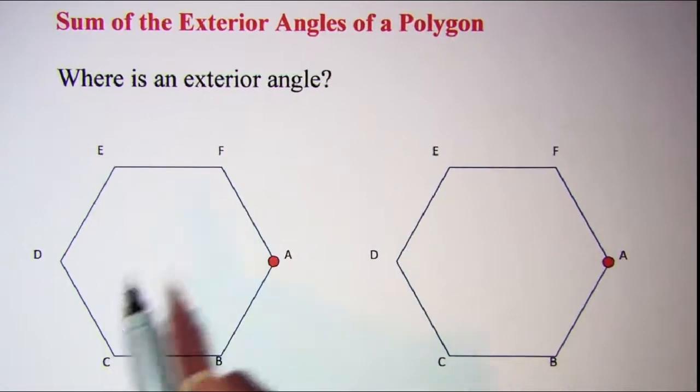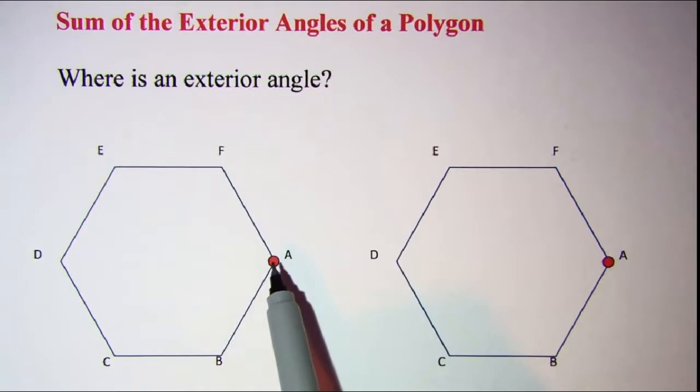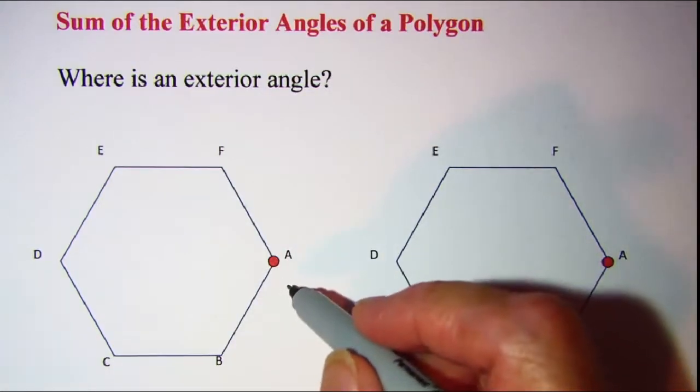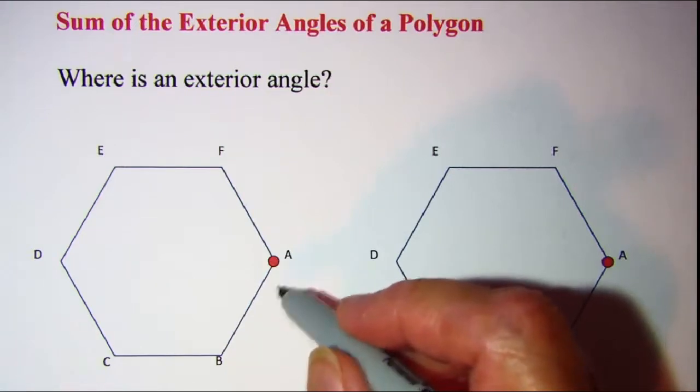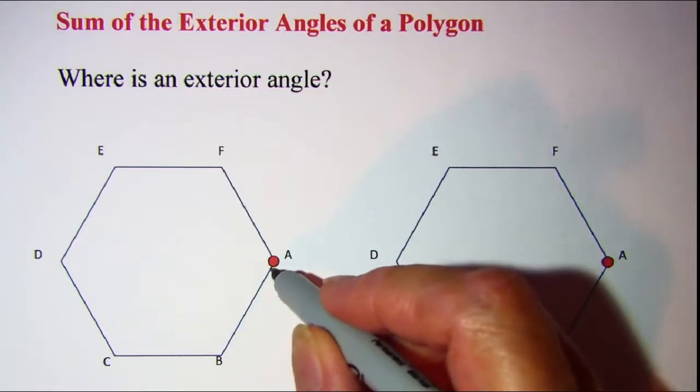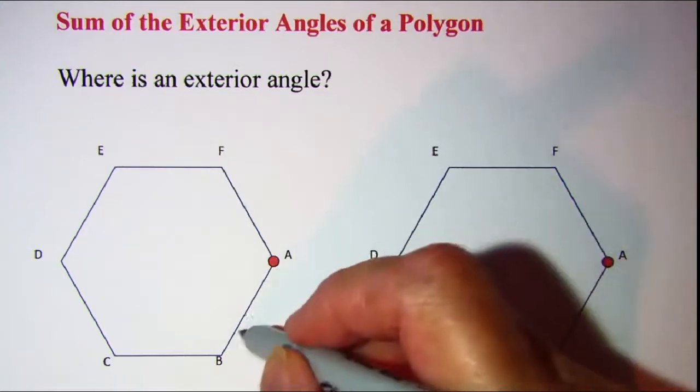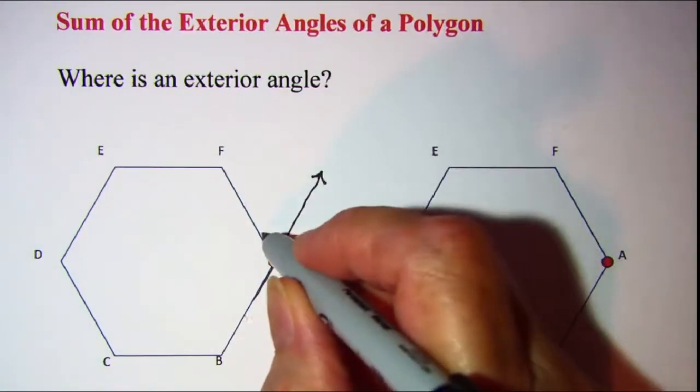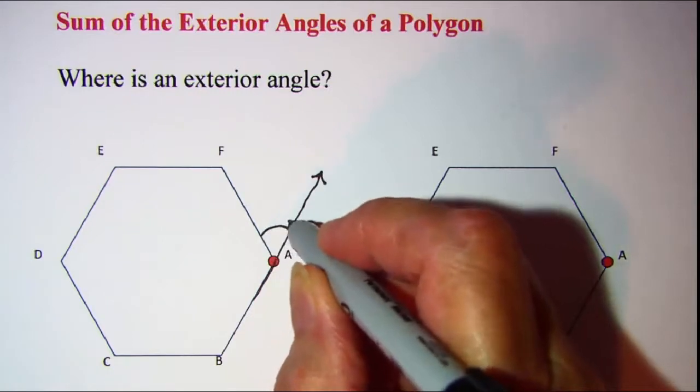In this diagram, we have a hexagon, and vertex A is marked with this red dot. If we want to locate the exterior angle, we know that an exterior angle is formed by extending the side of a polygon. So let's extend line segment BA at vertex A. And we can see then that our exterior angle is right here.